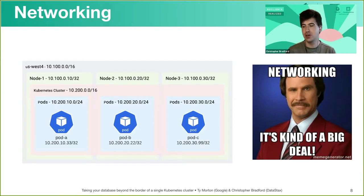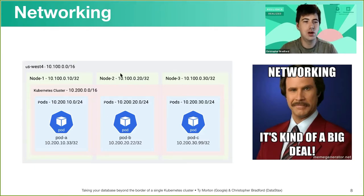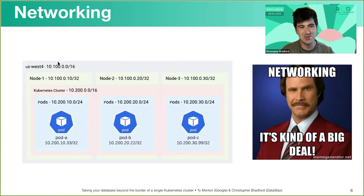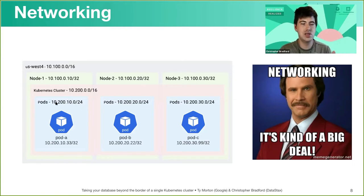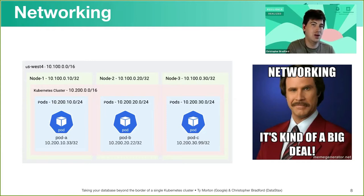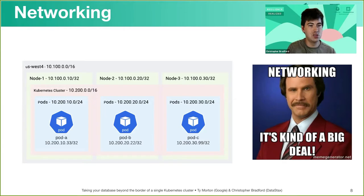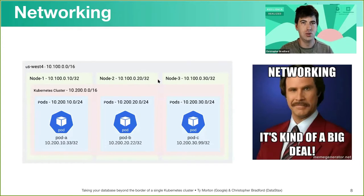That internal network is specifically where your pods run. A pod is a collection of containers sharing resources such as storage, networking, and process space. In our example, 10.100 is for the physical nodes and 10.200 is for the Kubernetes pod network. Each worker gets a slice of that 10.200 range — for example, worker node 1's pods get a 10.200.10 address space.